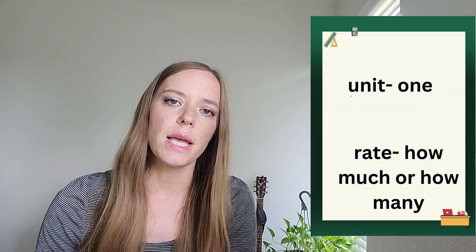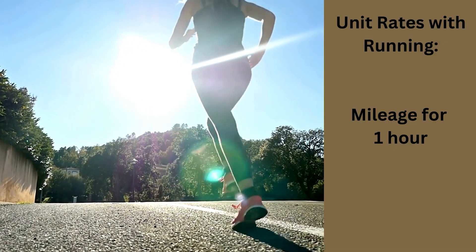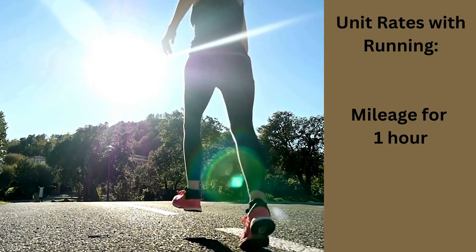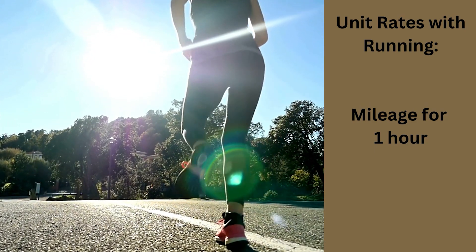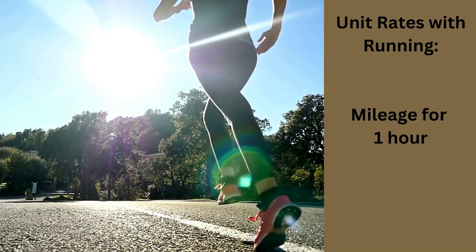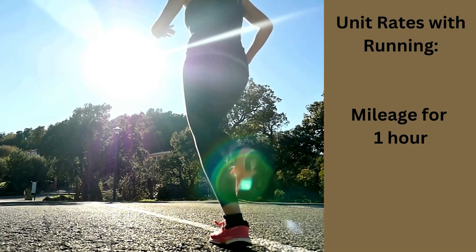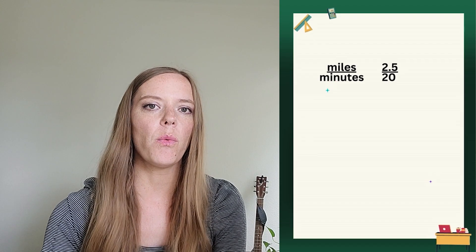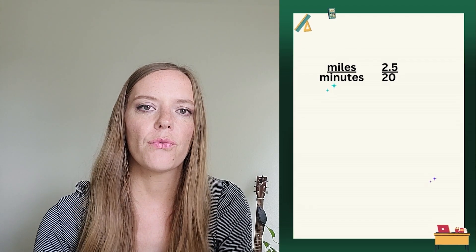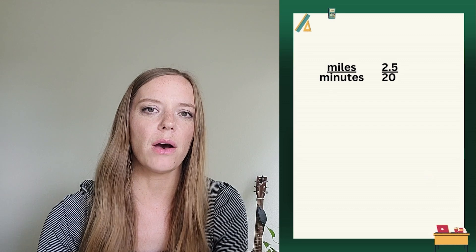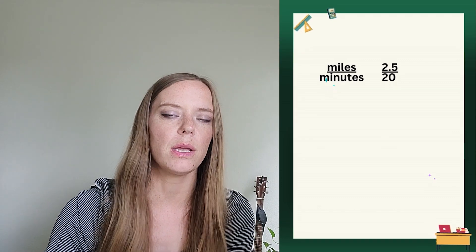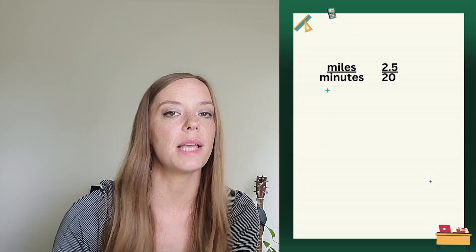Today, we're going to be using the idea of running for a certain amount of time to figure out what is our mileage for just one minute or one hour. Okay, so let's start with my example. So I went running for 20 minutes and I ran 2.5 miles. So we want to know what my unit rate of running is. And so we want to think about one hour, we want to know how many miles I could run in one hour if I stay at this same pace.